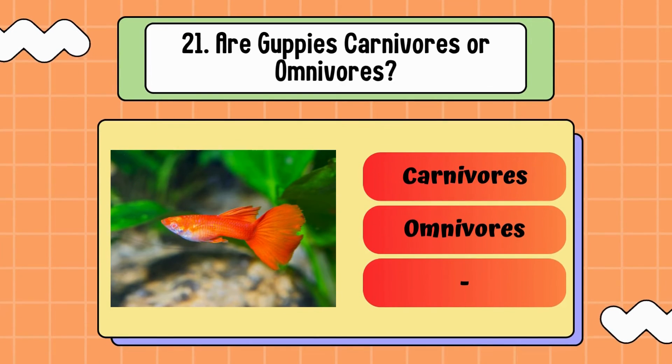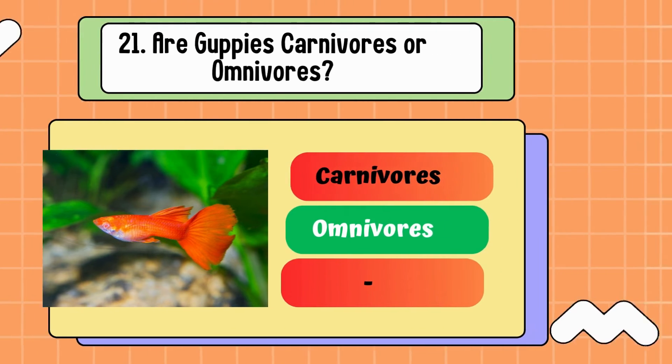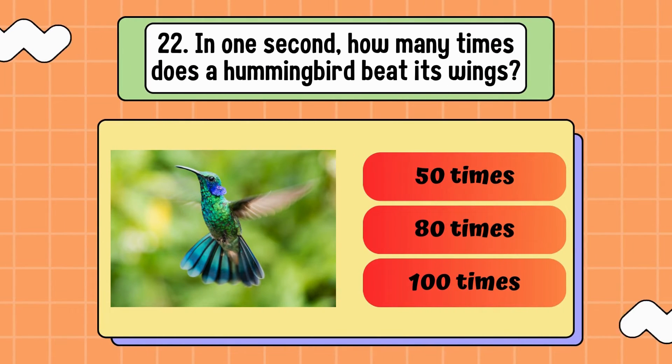Are guppies carnivores or omnivores? Correct answer is omnivores. In one second, how many times does a hummingbird beat its wings? 50 times, 80 times, or 100 times? Correct answer is 80 times.